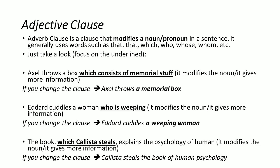Examples of adjective clauses: 'Axel throws a box which consists of memorial stuff' — 'which consists of memorial stuff' modifies 'a box' and can be replaced by a phrase: 'Axel throws a memorial box.' 'Edard cuddles a woman who is weeping' — 'who is weeping' modifies 'a woman,' equivalent to 'a weeping woman.' 'The book which Kalista steals explains the psychology of human' — 'which Kalista steals' modifies the noun 'the book.'